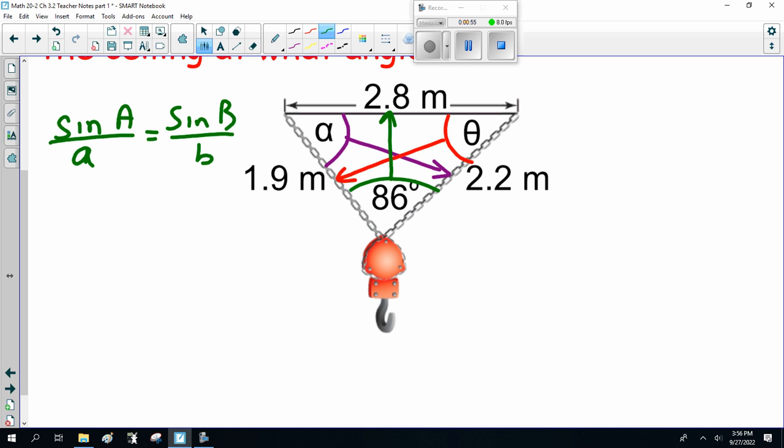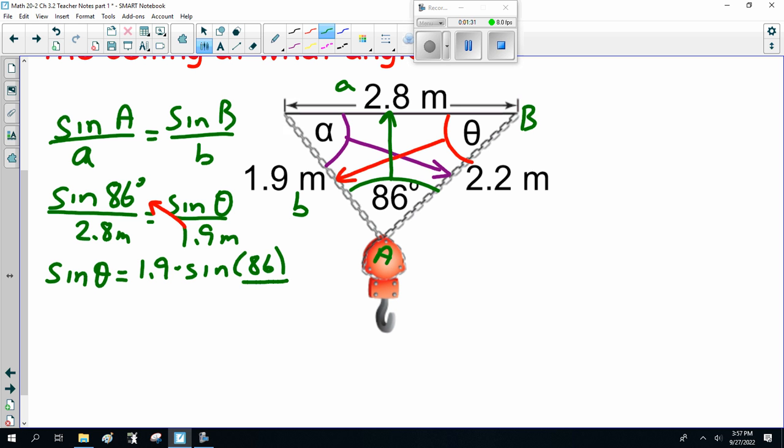Now, I'm arbitrarily going to call this one A, so this is side A, and I'm going to call this one B. It doesn't really matter. So this is sine of 86 degrees over 2.8 meters equals sine of theta over 1.9 meters. Now, once you get to this point, you realize you have to cross multiply, so sine of theta is 1.9 times sine of 86 divided by 2.8. Notice I've already cancelled out my meters.